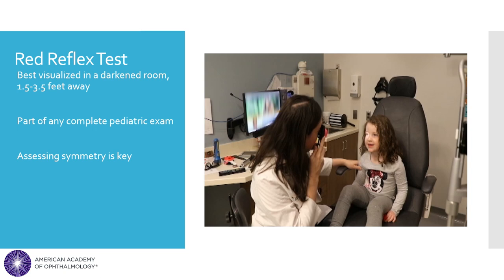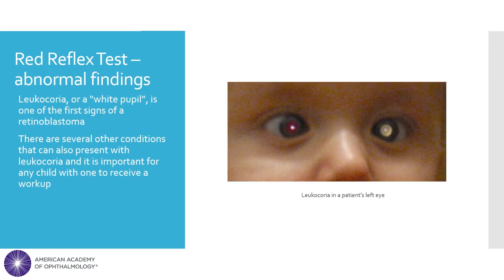Please note that the appearance of the red reflex varies based on retinal pigmentation and thus varies by race or ethnicity. Leukocoria, or a white pupil, is a classic case of an abnormal finding on the red reflex exam. It can be a sign of many ocular pathologies, from intrinsic eye pathologies such as Coats disease, to a life-threatening disease such as retinoblastoma.